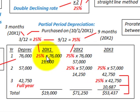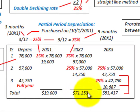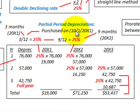To determine our depreciation expense for each fiscal year, we simply sum the amounts. For 20x1, we had $19,000. For 20x2, we get $71,250. For 20x3, summing the amounts gives us $53,437. The table works well for adding logic when you're trying to portion out depreciation expense between periods.